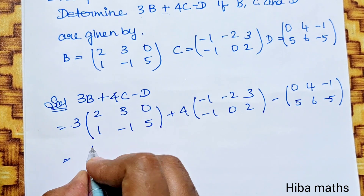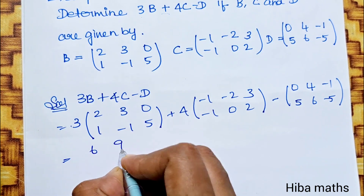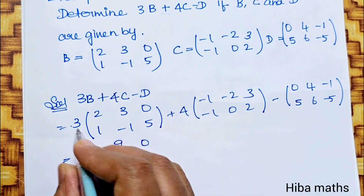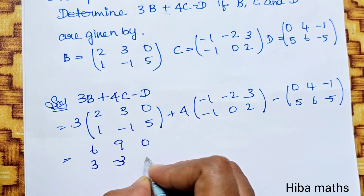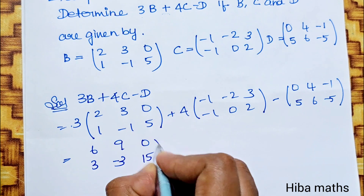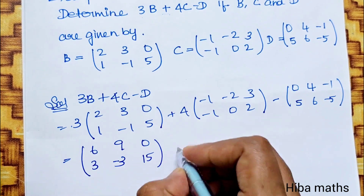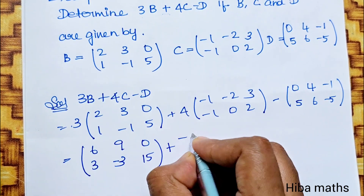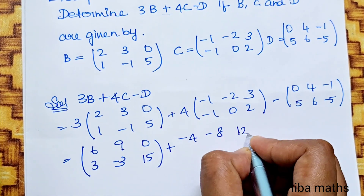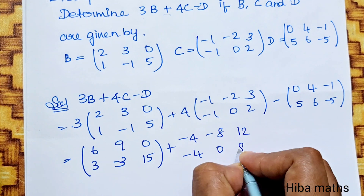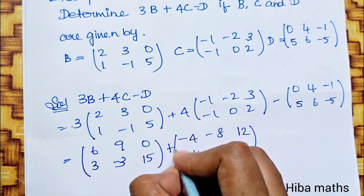Next line: 3 twos are 6, 3 threes are 9, 0 times 3 is 0, 3 ones are 3, minus 3, 15. Plus: minus 4, minus 8, 12, minus 4, 0, 8.